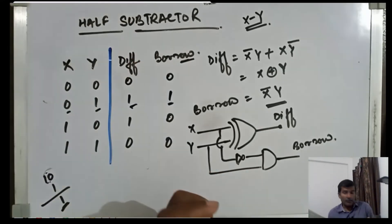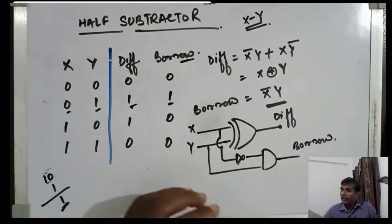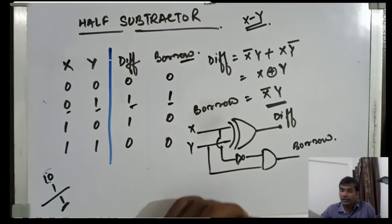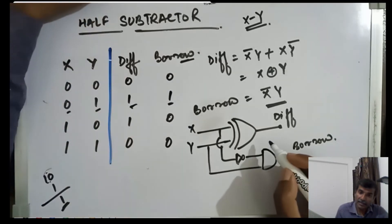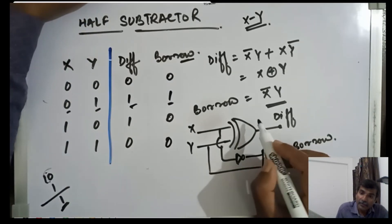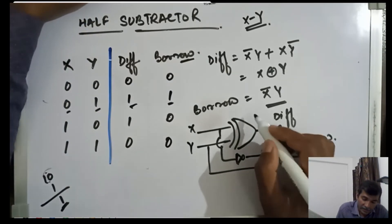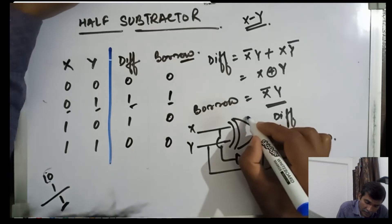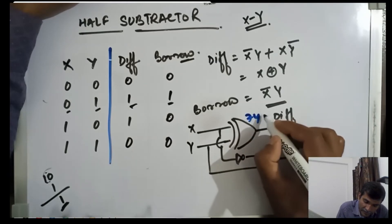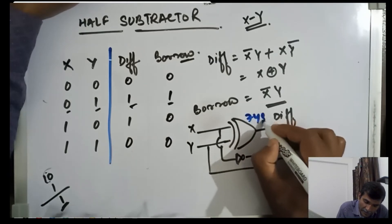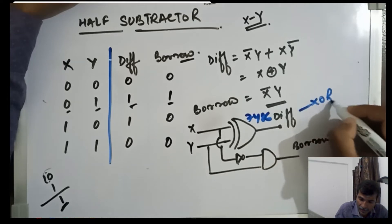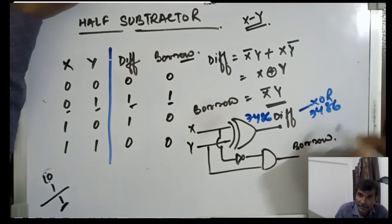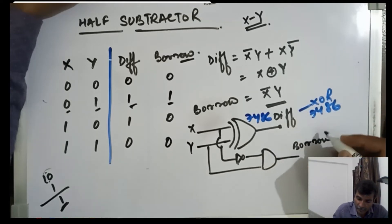This is the circuit. Now we will see this circuit in its IC diagram. For implementing this half subtractor we require IC 7486 for the XOR gate, and for the borrow we require IC 7404.